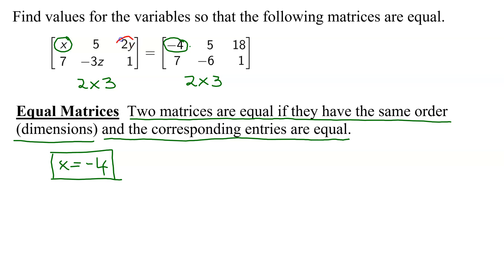The next one is 2y. So what does 2y equal? 2y is in row 1, column 3, so it has to equal the element that is in row 1, column 3 on the matrix on the right. So 2y equals 18. Divide both sides by 2.